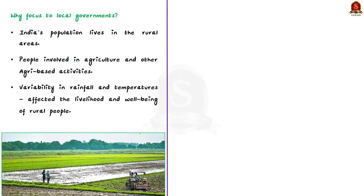Why should focus be given to local governments regarding climate change? Over the past few decades, there has been a manifold increase in climate-related natural disasters. Much of India's population still lives in rural areas and is involved in agriculture and agri-related activities. The greater variability in rainfall and temperatures due to climate change has directly affected the livelihood and well-being of millions of rural households. This provides the primary reason why focus should be given to local governments.